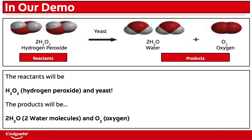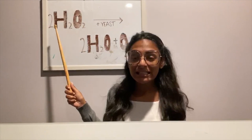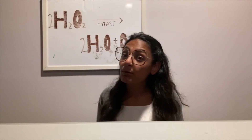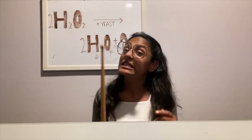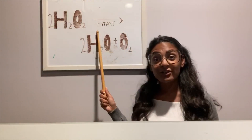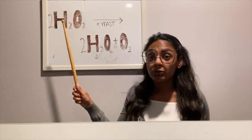In our demo, the reactants will be hydrogen peroxide and yeast, and the products will be two water molecules and oxygen. Here's Clara explaining more: We're going to start with H2O2, or hydrogen peroxide, as our reactant. But before the reaction can proceed, we need a catalyst — something that speeds up the reaction. In this case, we're using yeast, which you can find in the baking aisle. With the help of this catalyst, the H2O2 breaks down into water, and the excess oxygen is trapped in soap bubbles — that's how the elephant toothpaste happens.